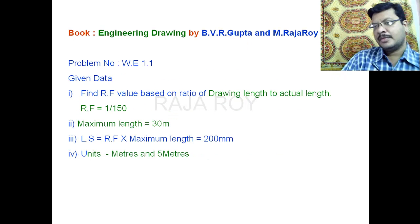Now we will see one problem. This problem is taken from engineering drawing by BVR Gupta and Rajarai. This is problem number 1.1. In this problem the given data is something like this. RF value is not given directly. You have to find the RF value. Drawing length and actual length are given. From drawing length and actual length calculate the RF value. If you calculate RF value you will get as 1 by 150.